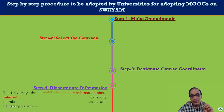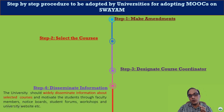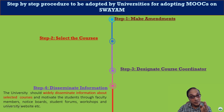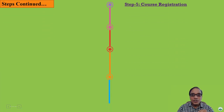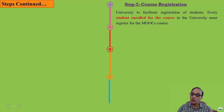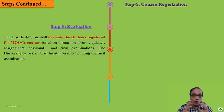The last step is disseminating that information. You will have to widely disseminate information about the selected courses so that all students get enrolled. This is the responsibility of the institution. The university must facilitate registration of students, and every student enrolled for the course in the university must register for the selected MOOC course.